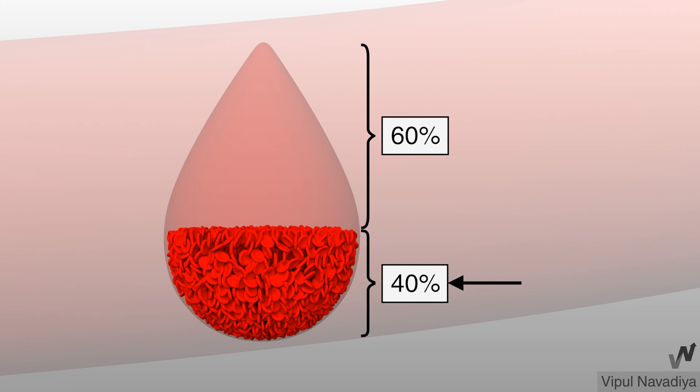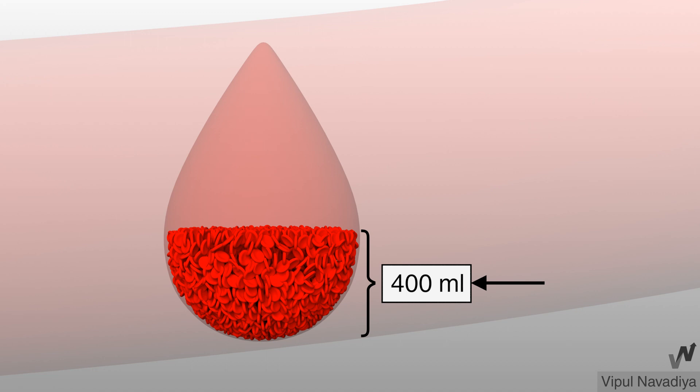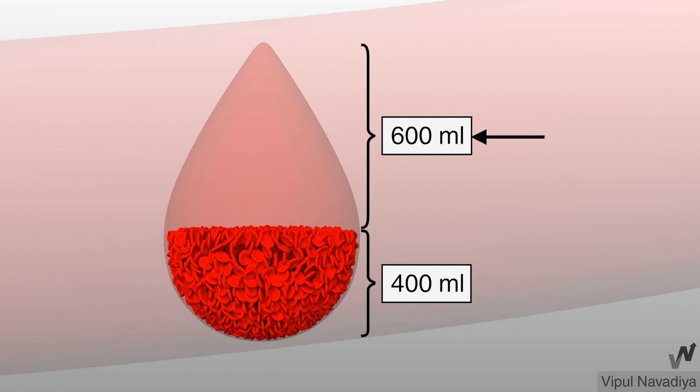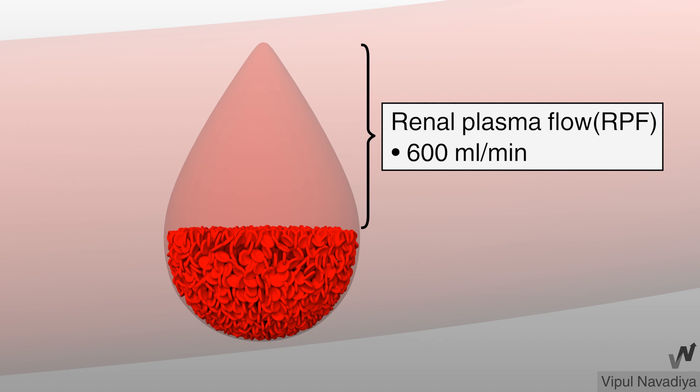Let's assume that hematocrit is 40%. That means in 1000 ml of blood, 400 ml is blood cells and 600 ml is plasma. Thus, we can say renal plasma flow is about 600 ml per minute.